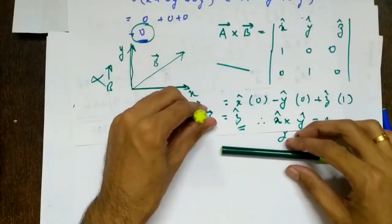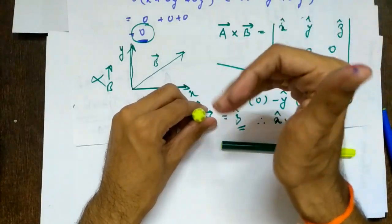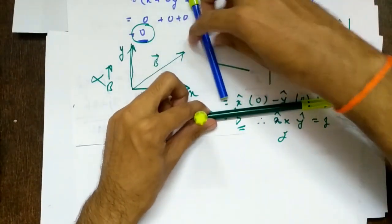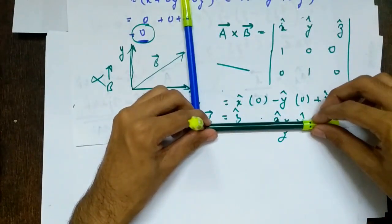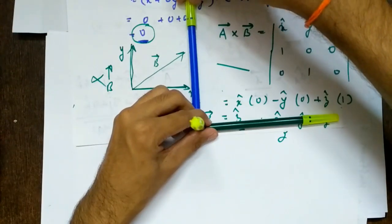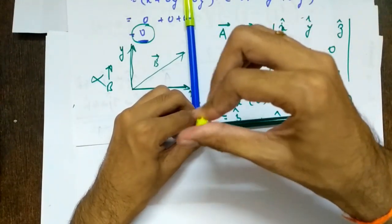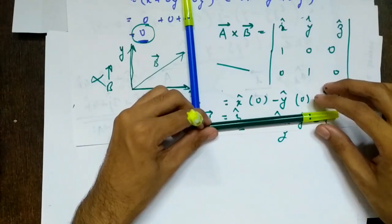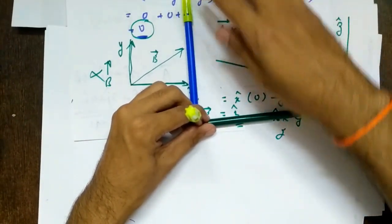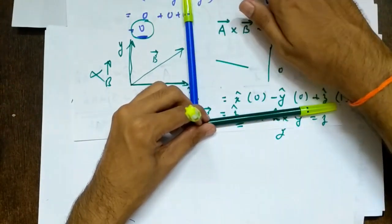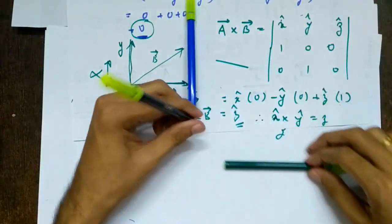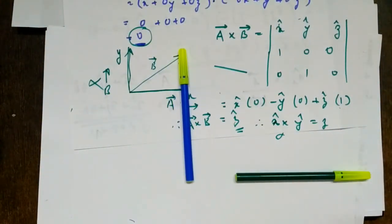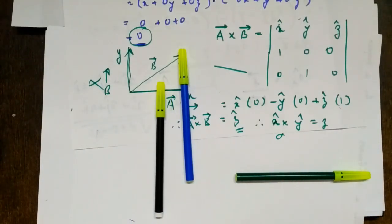So A is the x vector, B is the y vector, and the answer we got is the z vector. The cross product always gives an answer which is perpendicular to the plane of the two vectors. The plane of x and y is the xy plane, and the vector perpendicular to xy is z — that is why we got z as the answer. Cross product always gives a vector perpendicular to the plane of the two input vectors.